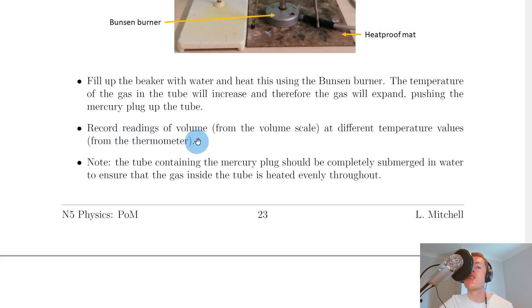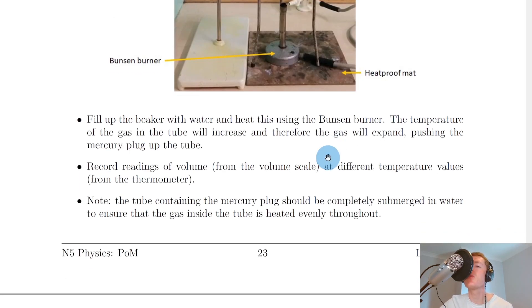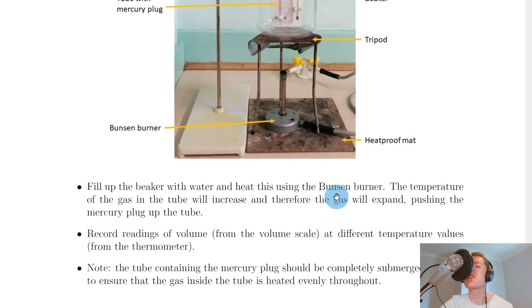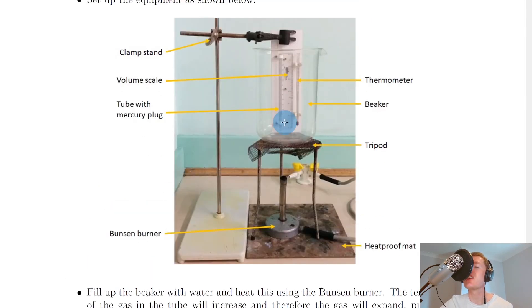Record readings of volume from the volume scale at different temperature values from the thermometer. The volume scale is actually just our ruler. You're actually just taking measurements in centimeters of where the mercury plug is, but this gives us an indirect measure of volume as well.